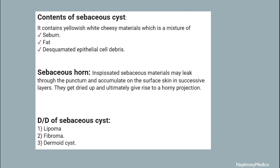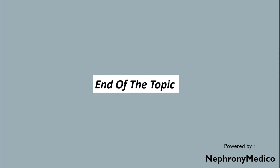Sebaceous horn means that the inspissated sebaceous material may leak through the punctum and accumulate on the surface of the skin in successive layers. They get dried up and ultimately give rise to a horn-like projection known as a sebaceous horn. Differential diagnosis of sebaceous cyst includes lipoma, fibroma, and dermal cyst. End of the topic.